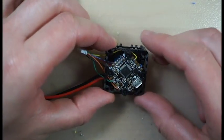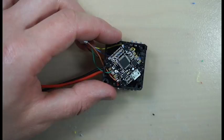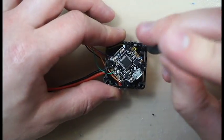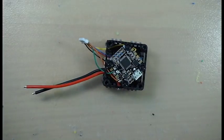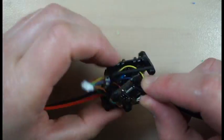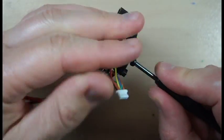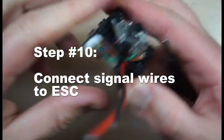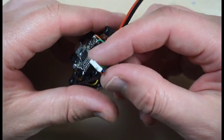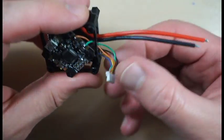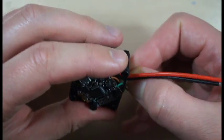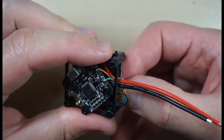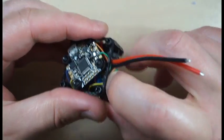Now we can finally put flight controller on top of the speed controller and screw them together with nylon screws. After all screws are installed we can insert signal wires connector back into the speed controller. Tuck wires inside and maybe even use hot glue so they won't come out during the flight.